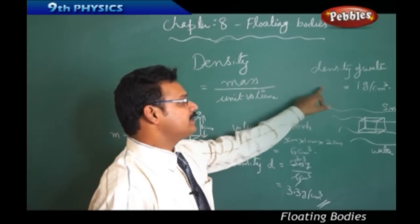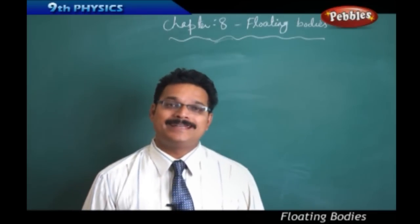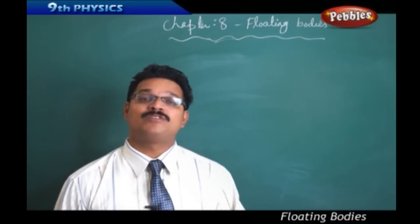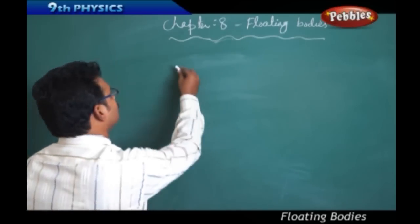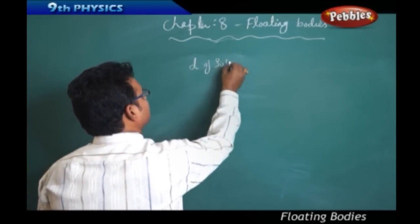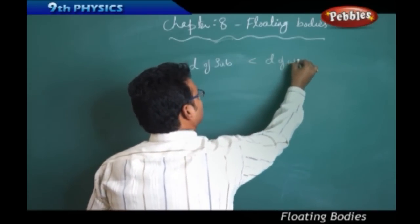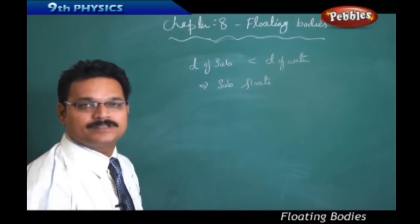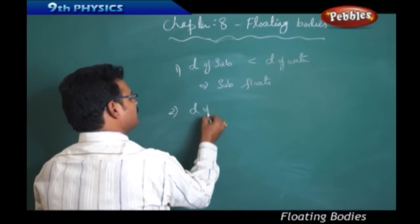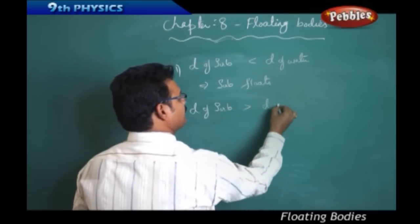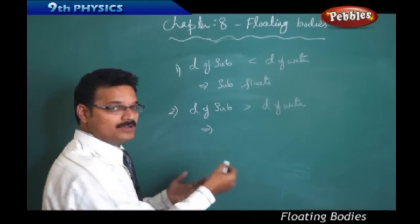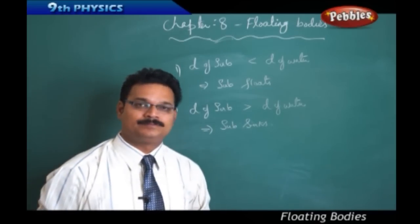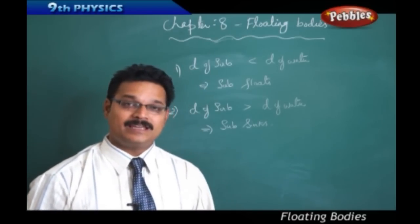The block sinks because its density is more than the density of water. We understand that when the density of a substance is less than the density of water, it floats. If the density of the substance is greater than the density of water, the substance sinks. You should know the density of each and every substance to tell whether it will sink or float.